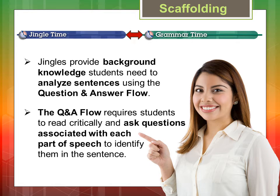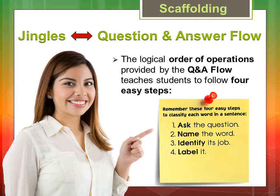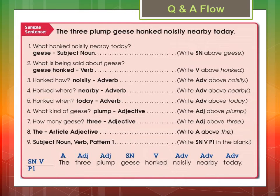The Q&A flow teaches students to read the sentence being analyzed and then follow four easy steps. They will learn to ask the question, and when the answer is determined, they will name the word, identify its job, and label it correctly. Allow me to demonstrate.